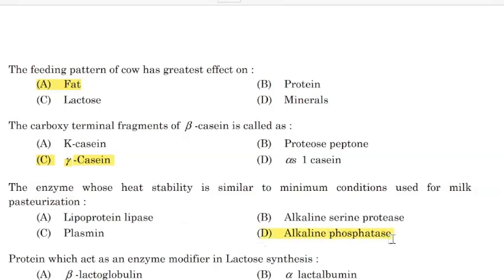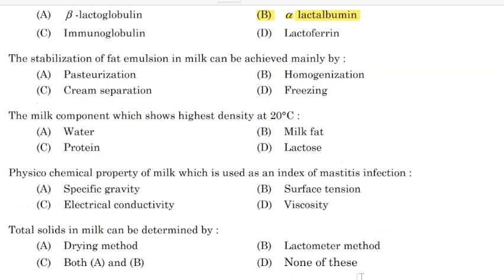Correct answer: Option D — Alkaline phosphatase. The stabilization of fat emulsion in milk can be achieved mainly by — Correct answer: Option B — Homogenization.